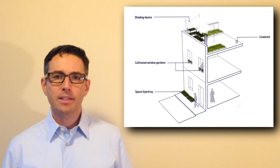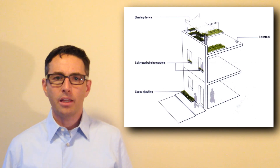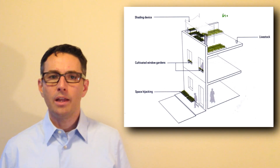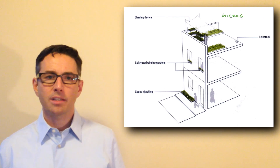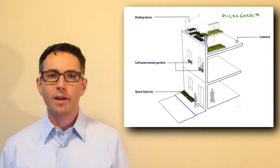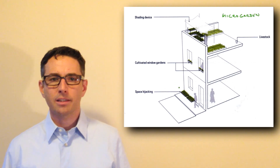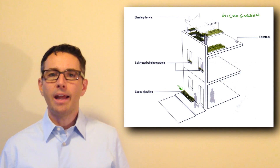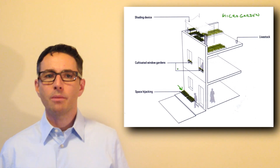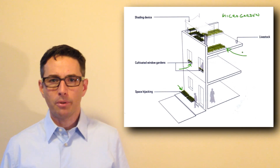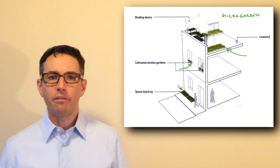The first kind of urban agriculture in Cuba is the microgarden. This entails things like space hijacking — something we might call in the U.S. guerrilla gardening — where you plant things at the little strips of land outside your building. You might have cultivated window beds, and some small places on your patio where you can plant small plants of various kinds.